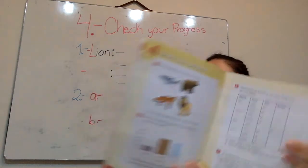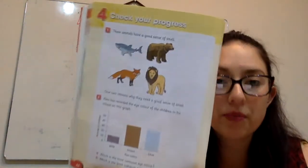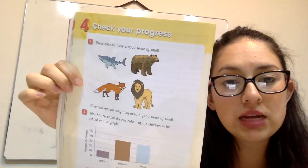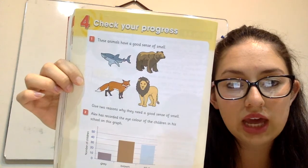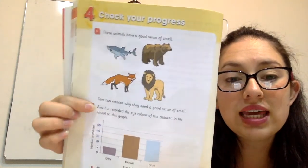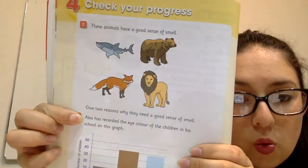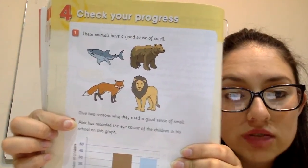Vamos a nuestro libro on the page 44. Here we have these animals have a good sense of smell. Pick two reasons why they need a good sense of smell.